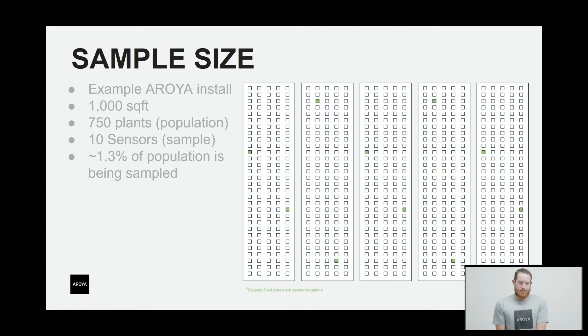Let's talk about sample size. So a sample size is how many parts of a population that are being considered for statistical analysis. In this case we have an example Arroyo install. This room's a thousand square foot. Each of the large boxes is representing a bench, each of the small boxes is representing a plant, and each of the green boxes is representing a plant being sensed. So we've got 750 plants in here. That's the population size. The number of sensors in the room is 10.